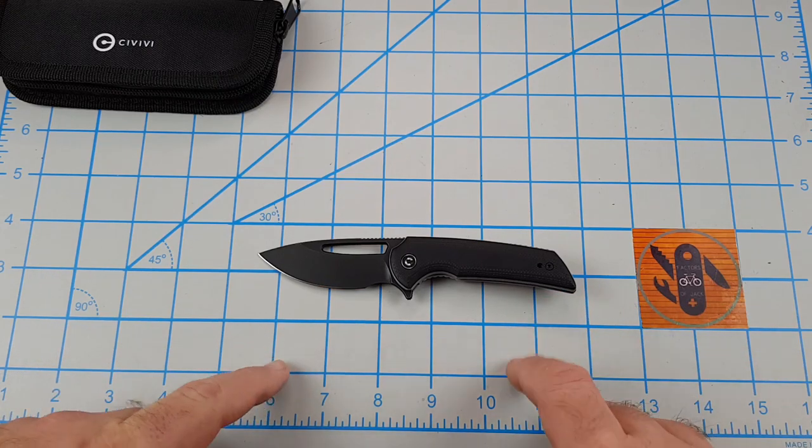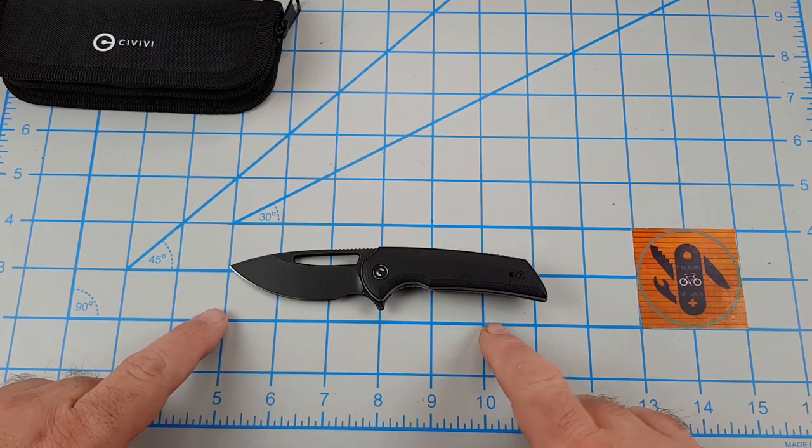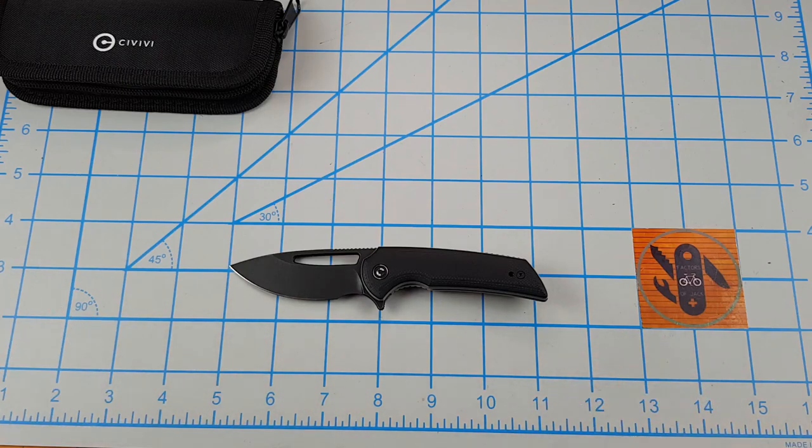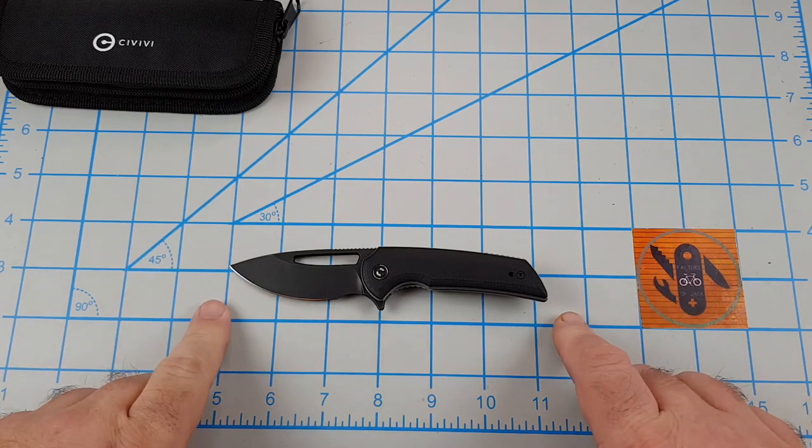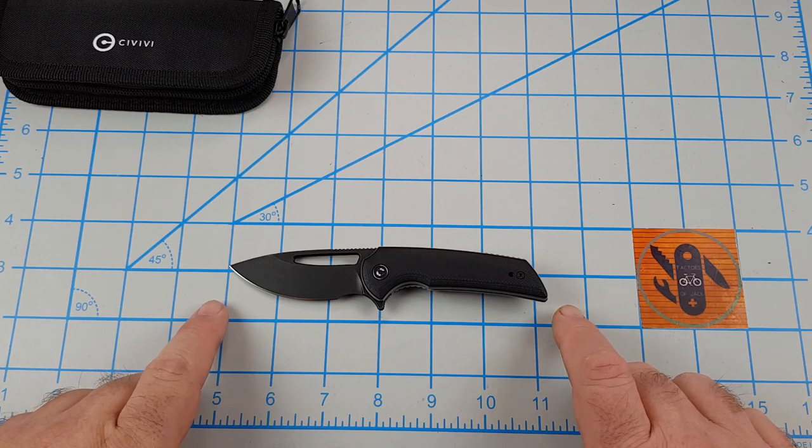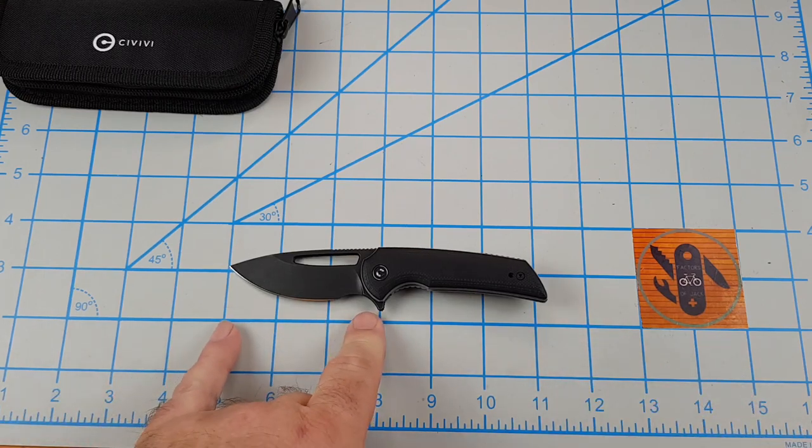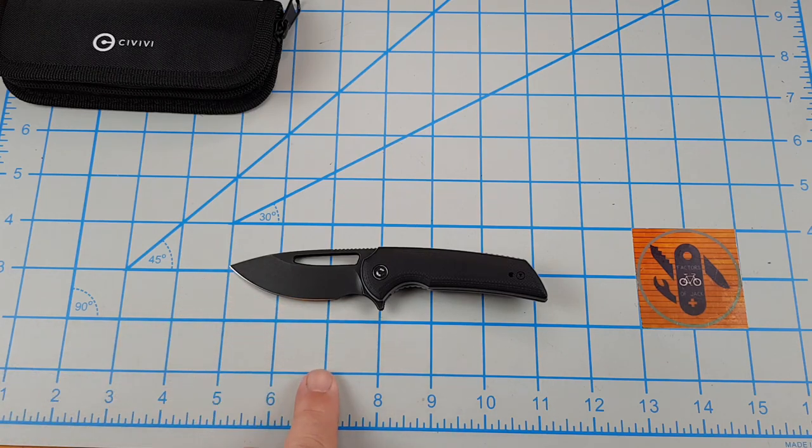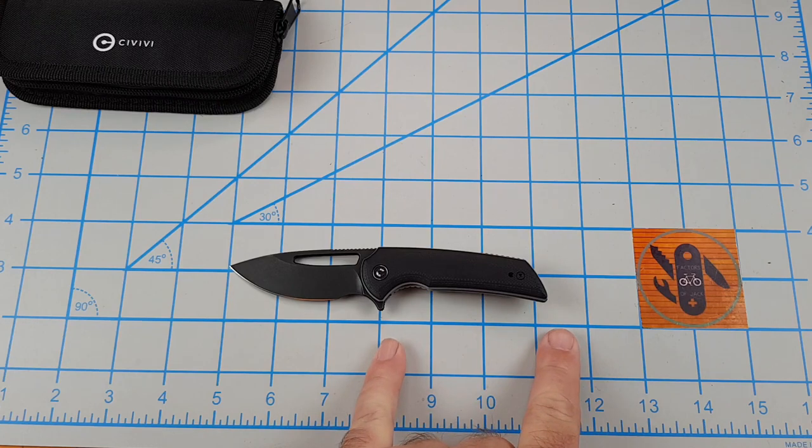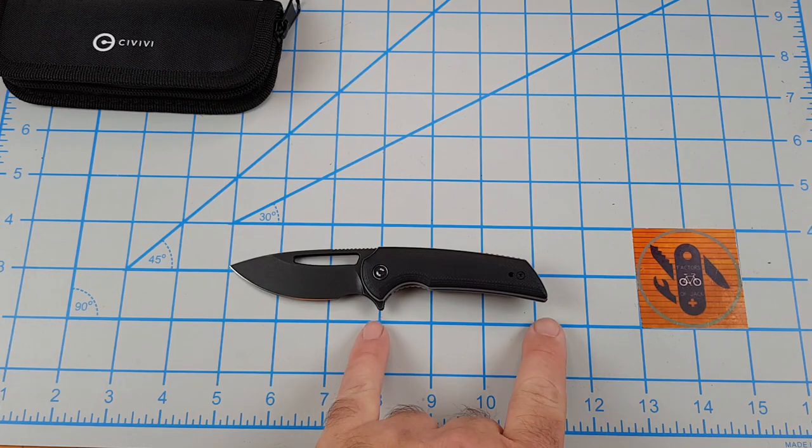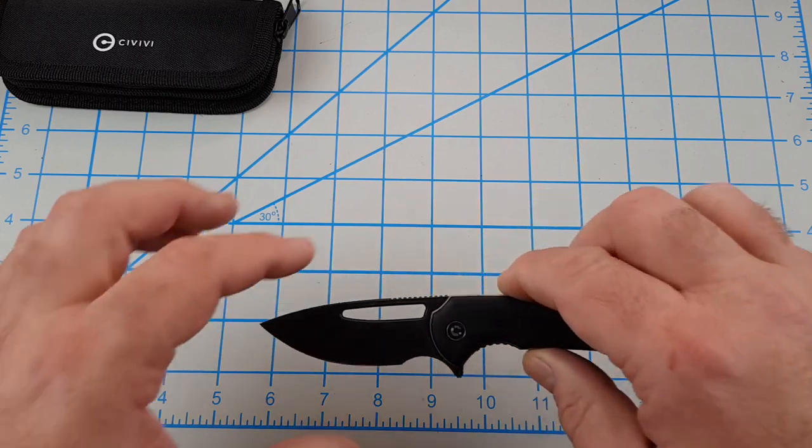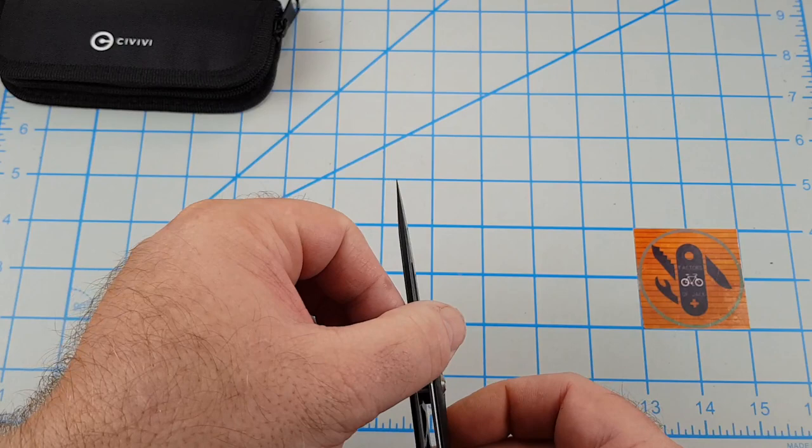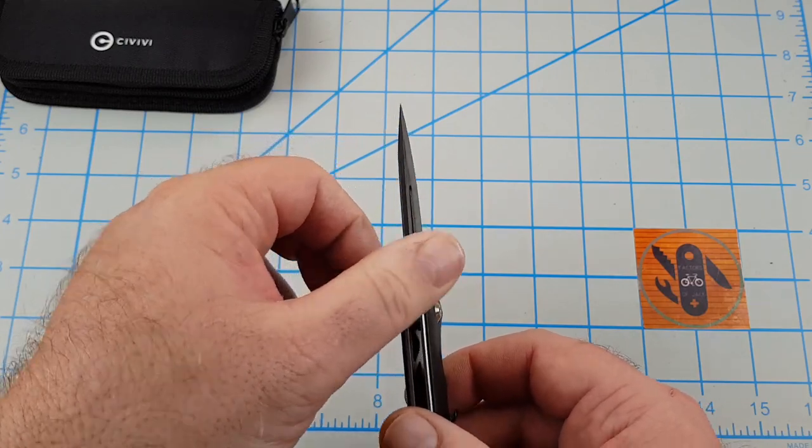This thing is not a big knife, this thing's tiny. In fact, I read the specs and knew the specs, but it's still a little bit smaller than I thought. You have an overall length of 6.19 inches, blade length is 2.65, cutting edge about 2.25, handle is 3.54, and blade height is one inch.